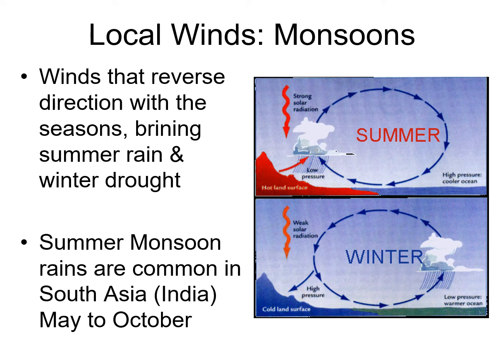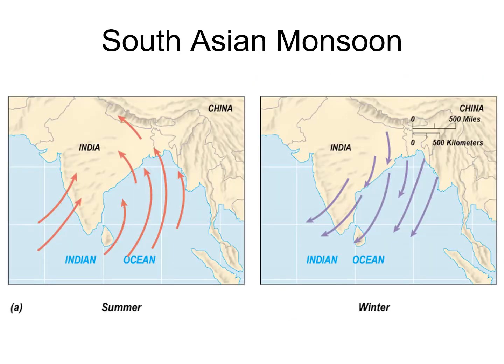The reason I talk about India and South Asia in general is that this is the area we really do associate with the monsoons more than any other. The summer condition brings moisture from the oceans to the land with lots of rainfall, while in wintertime, air sinks over land giving clear conditions.